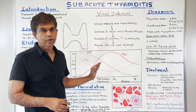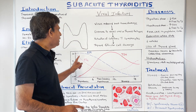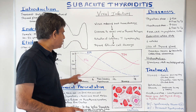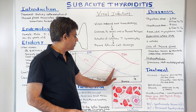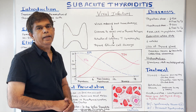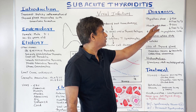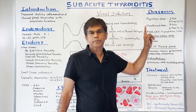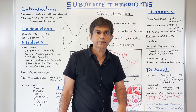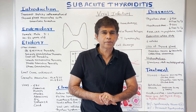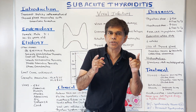Looking at the labs: in the thyrotoxic phase, TSH is decreased and free T4 and free T3 are increased. In the hypothyroid phase, TSH is increased and free T4 and T3 are decreased. Additional labs show elevated ESR, elevated CRP, elevated thyroglobulin, and elevated WBC, all reflecting the inflammatory process.